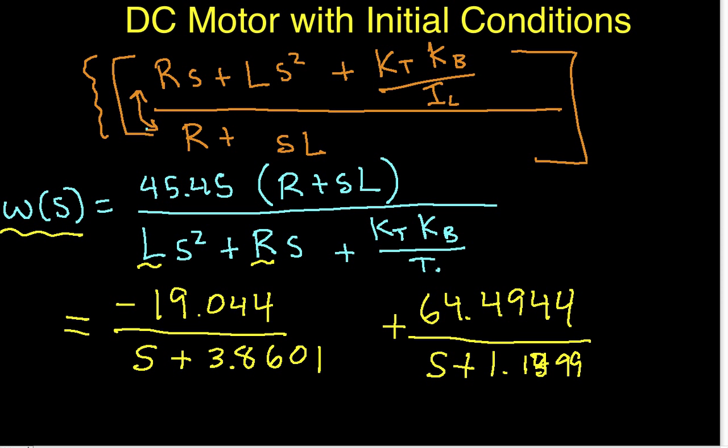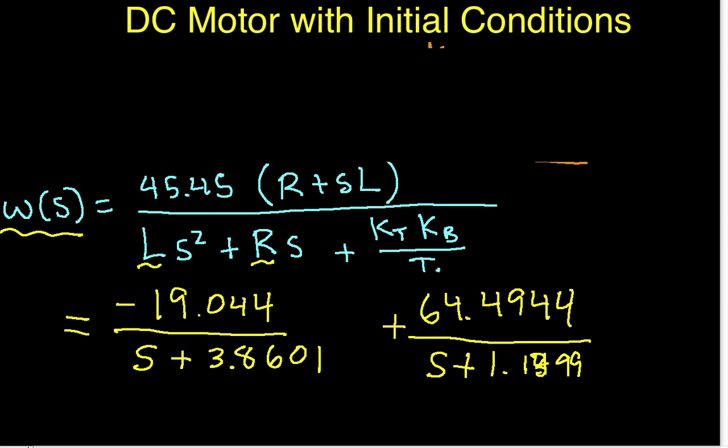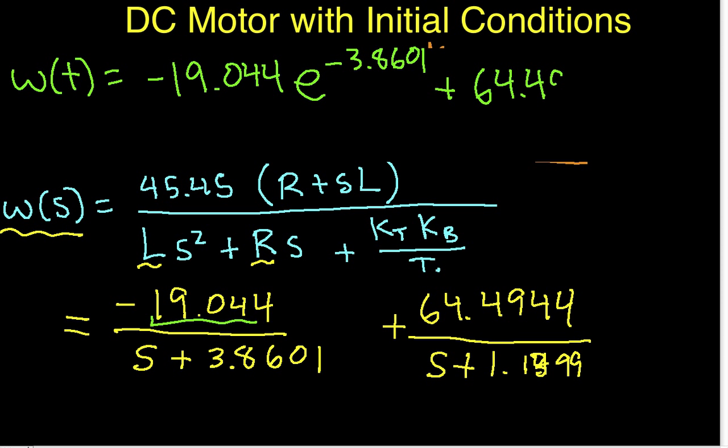Now, we can take the inverse Laplace transform of this, to get that omega T is given by minus 19.044 e to the minus 3.8601 T plus 64.4944 times e to the minus 1.1399 T, and I dropped a T here. Okay, so that's our time function, and I think with that, we will go ahead and conclude this video.